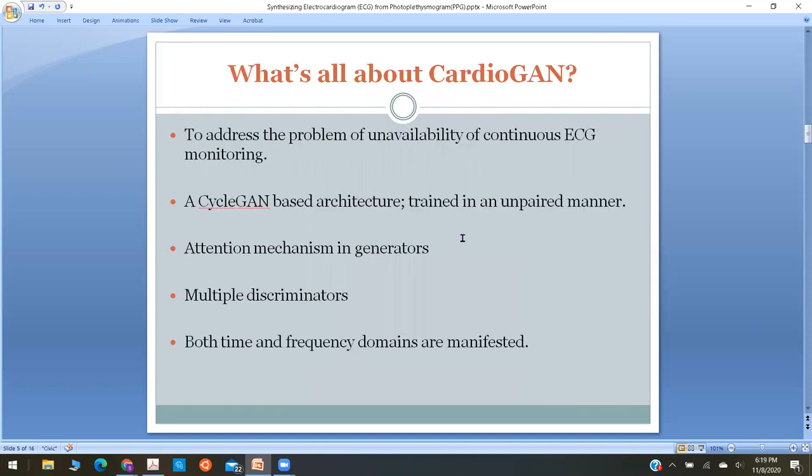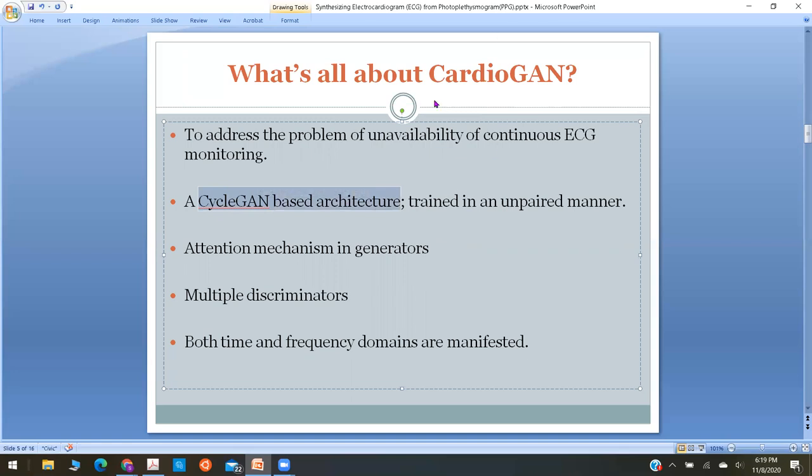In this paper, there is a deep learning approach that was proposed to convert a given PPG signal into corresponding ECG signal with great accuracy. They named that architecture CardioGAN. A typical CycleGAN architecture is the baseline approach to construct the CardioGAN. The only difference is that a CycleGAN is trained in an unpaired manner, but CardioGAN was trained in an unpaired manner.